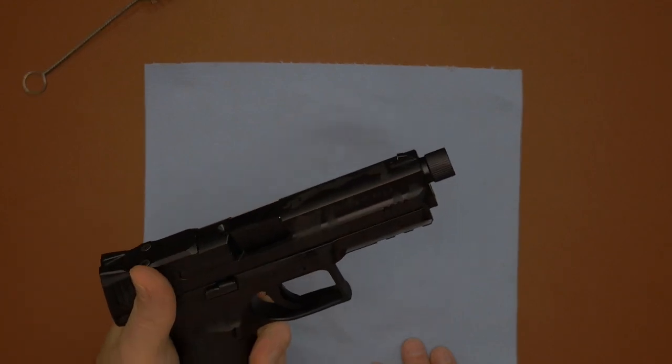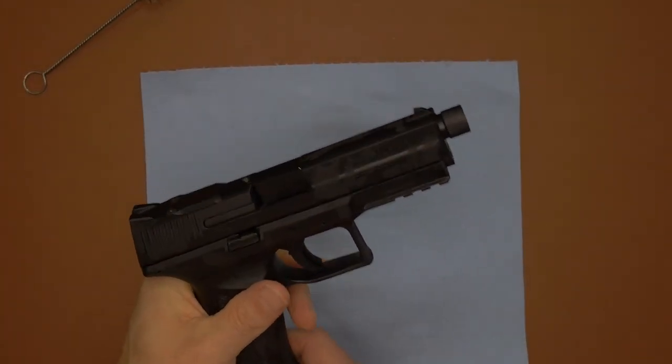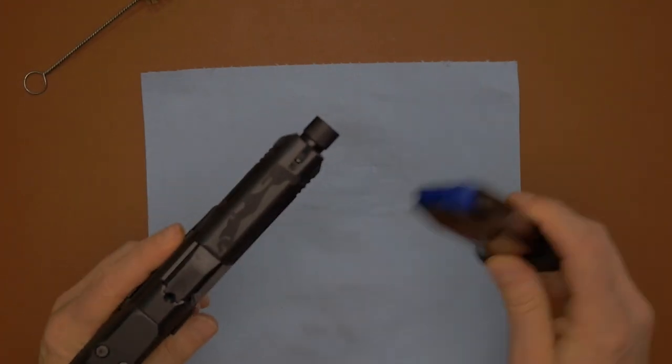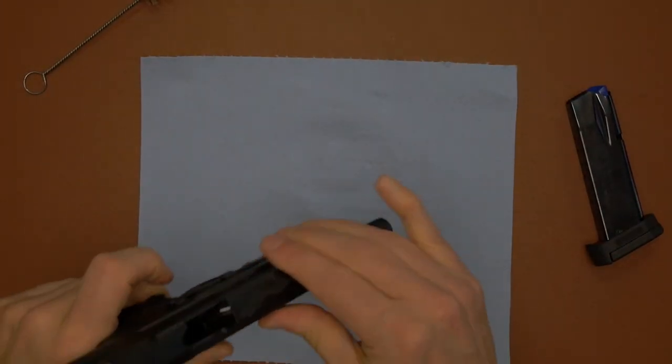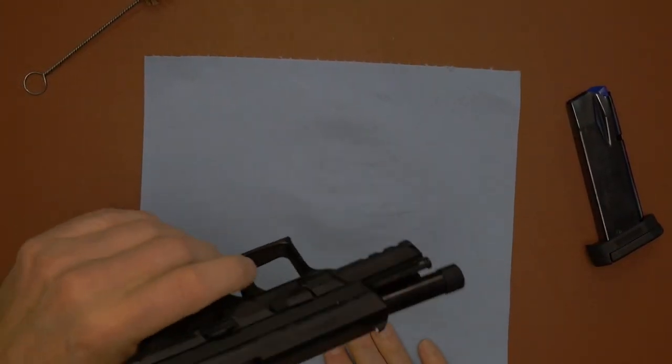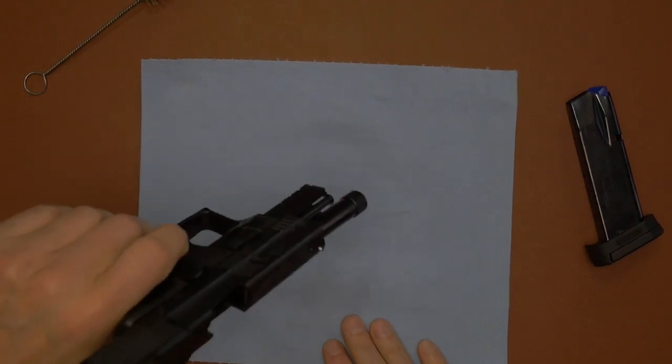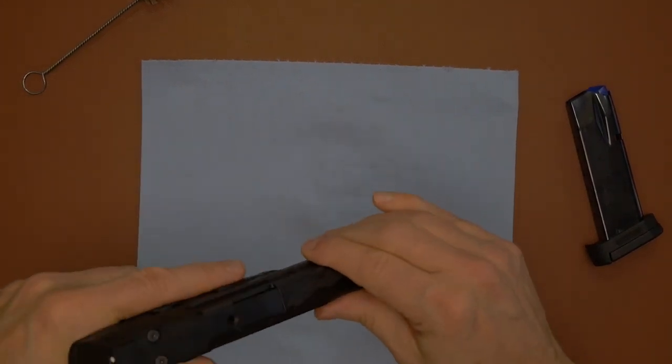So let's go ahead and make sure this firearm is not loaded. We'll drop the magazine, no ammo there. We'll lock the slide back and check the chamber. Look down the magwell, there's no ammo in there. So we are good to go there.